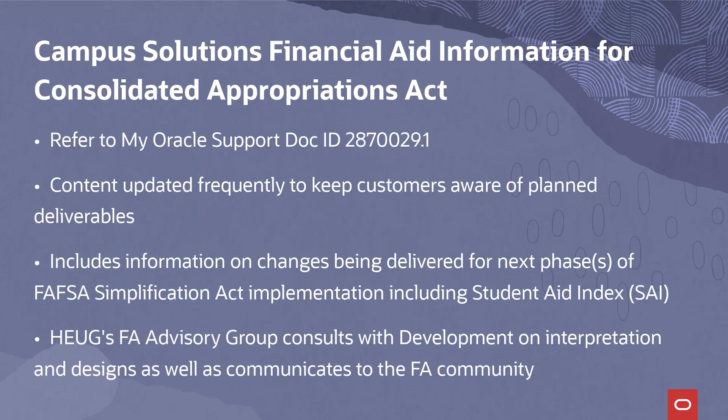We also wanted to make sure that our customers were kept current on the Campus Solutions plans to support the Consolidated Appropriations Act from the Department of Ed. There is a Doc ID in My Oracle Support which we update frequently to keep you aware of our planned deliverables. This Doc ID includes information on the changes being delivered for the next phases of the FAFSA Simplification Act implementation, including SAI, the Student Aid Index. The HUGS Financial Aid Advisory Group also consults with development on interpretation and design of the new capabilities and communicates their findings to the financial aid community.